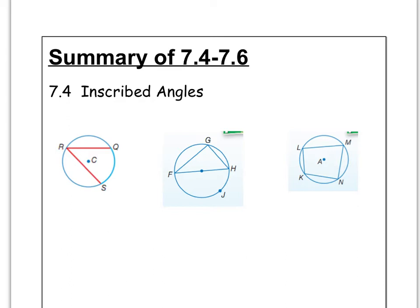So in section 7.4 we talked about inscribed angles, and remember inscribed angles have their vertex right on the circle. Like for instance right here, angle QRS, this angle right here is an inscribed angle. The main thing that we learned is the angle is half of the measure of the intercepted arc. So if this arc out here is 100 degrees, angle R is 50. Remember the inscribed angle is half of the arc.